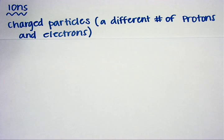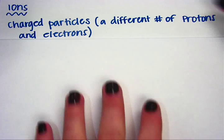The next thing we're going to talk about is ions. Ions are charged particles, which means they have a different number of protons from the number of electrons.